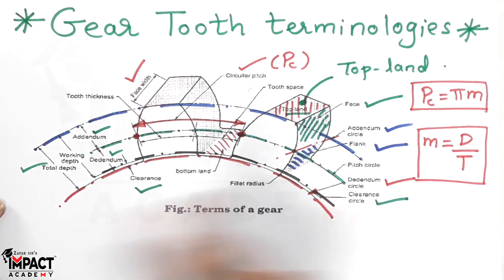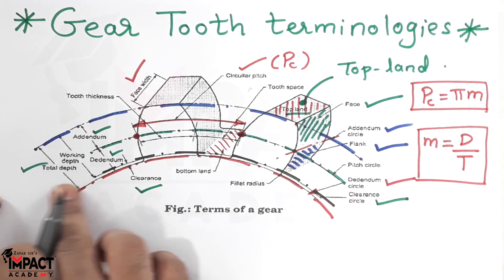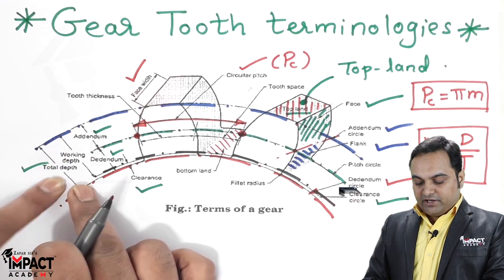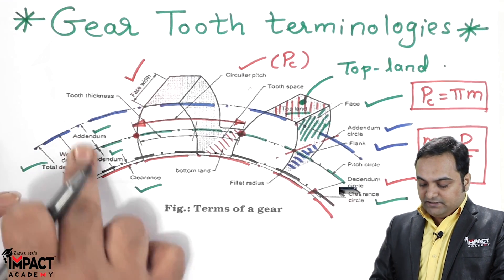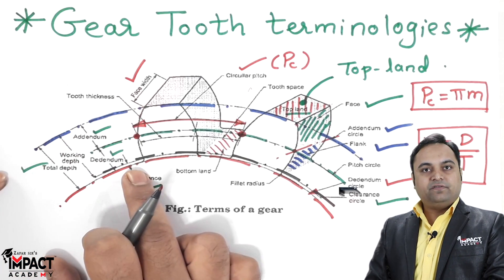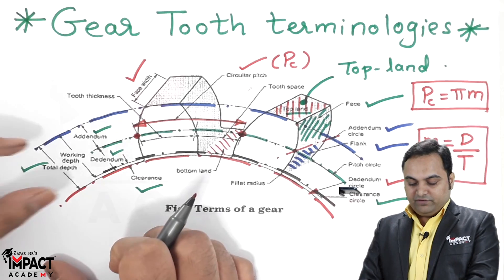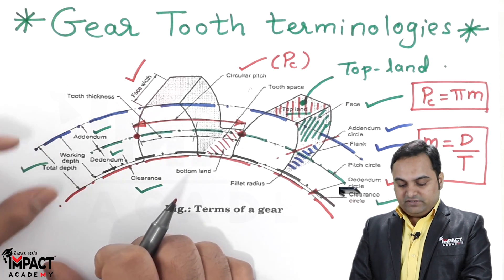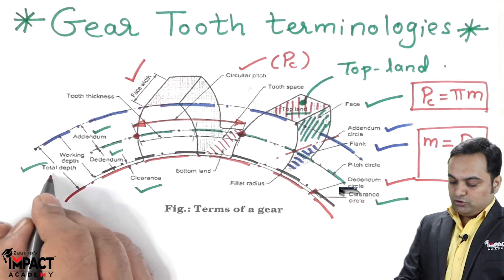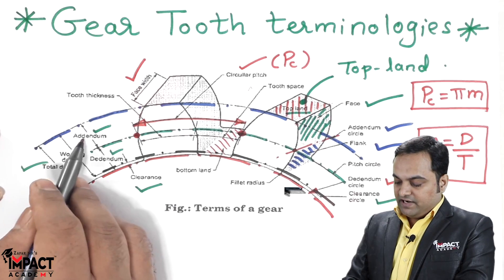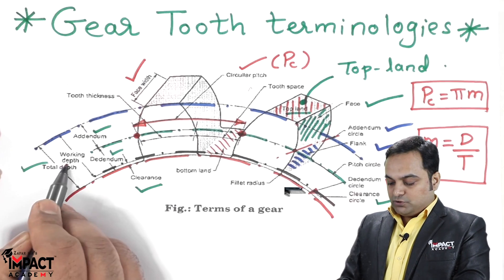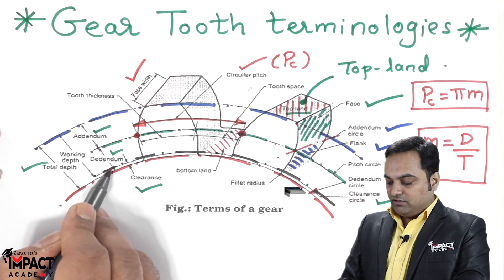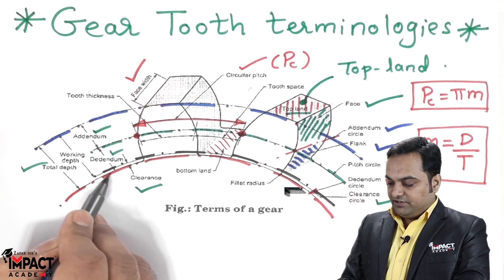Working depth is addendum plus dedendum minus clearance — that is, leaving the clearance, whatever radial distance is left is called the working depth. Total depth is addendum plus dedendum, whereas working depth is addendum plus dedendum minus the clearance.